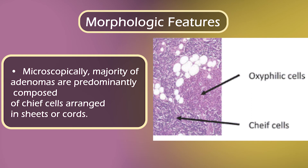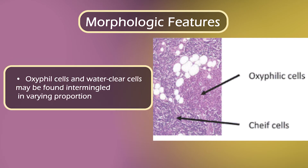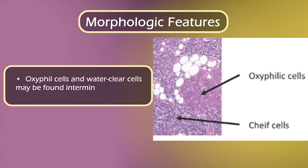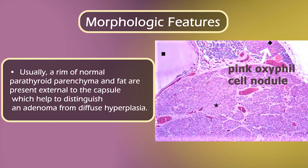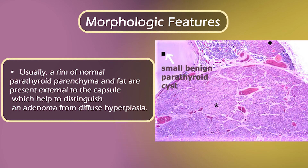Microscopically, the majority of adenomas are predominantly composed of chief cells arranged in sheets or cords. Oxyphil cells and water-clear cells may be found intermingled in varying proportions. Usually, a rim of normal parathyroid parenchyma and fat are present external to the capsule, which helps to distinguish an adenoma from diffuse hyperplasia.